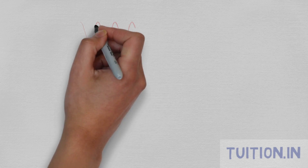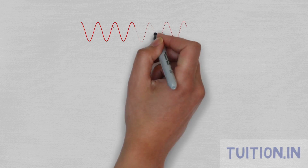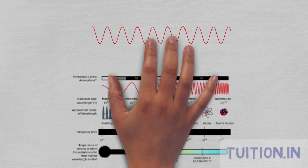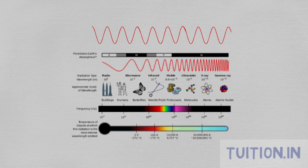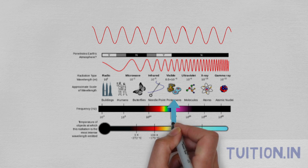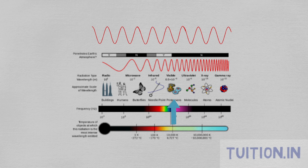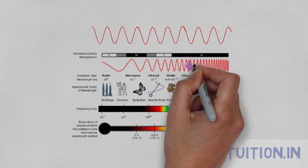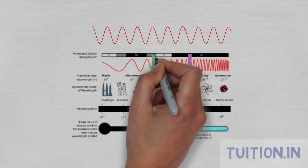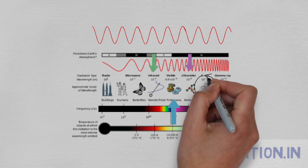As we all know, light is a form of radiation — an electromagnetic radiation — and at certain wavelengths it is visible to the human eye. Light takes other forms of radiation which we cannot see with the naked eye, such as the ultraviolet, infrared, and X-rays.